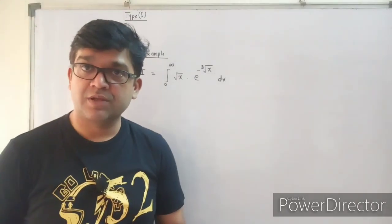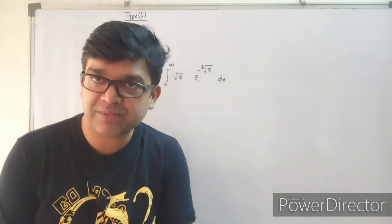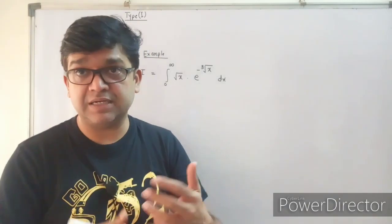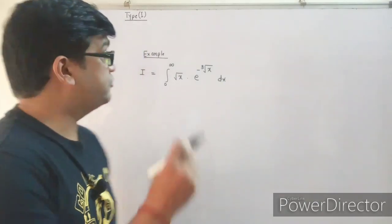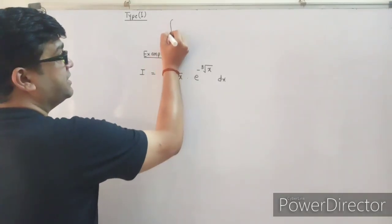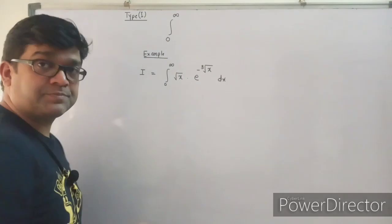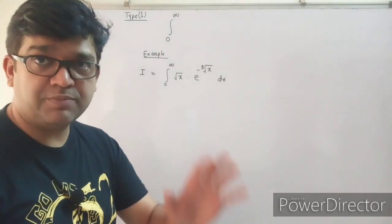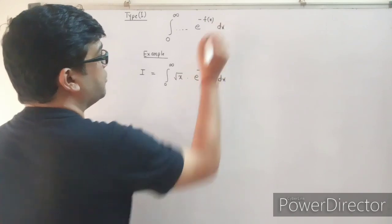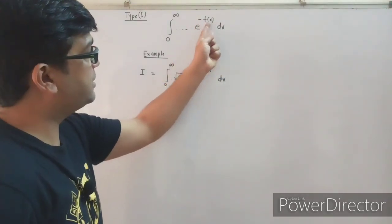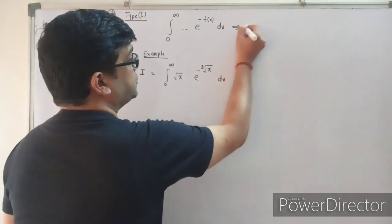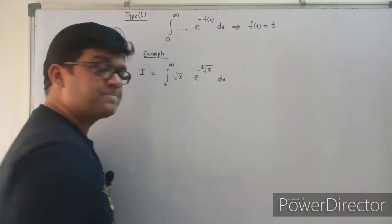Now let's solve important problems on gamma function, classified by type. Type 1 problems: the integral has limits 0 to infinity, and contains a function multiplied by e raised to minus f(x). When you see these two features — limits 0 to infinity and the presence of e raised to minus f(x) — substitute f(x) as t.